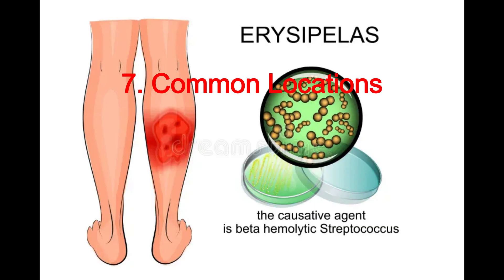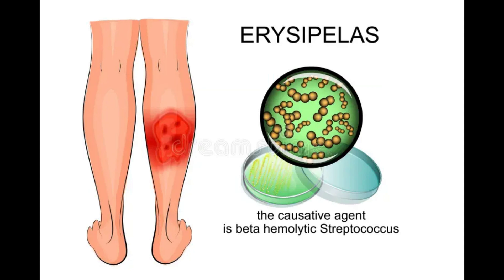Seven, common locations. Cellulitis can occur anywhere on the body but commonly affects the lower legs. Erysipelas more commonly affects the face and legs.